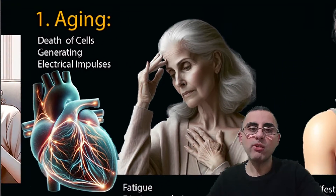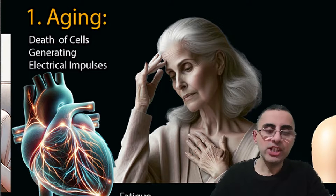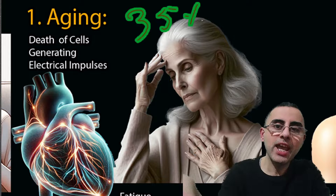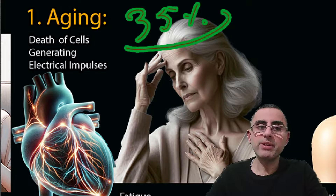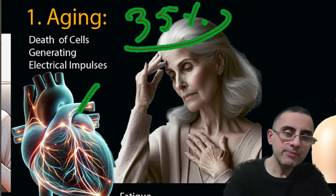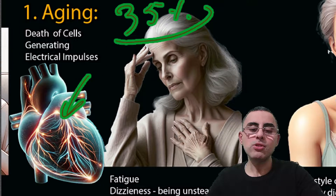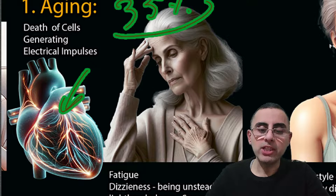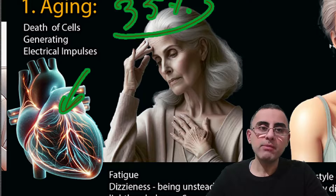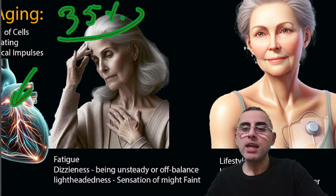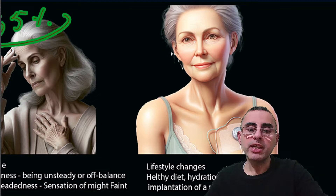The first and most common cause of bradycardia is aging, which accounts for around 35 percent of cases. During aging, all cells gradually die, including the electrical impulse-generating cells in the heart, which causes slow heart rate. The top symptoms of bradycardia during aging are dizziness, when people feel unsteady or off balance, lightheadedness with a sensation of faintness, and chronic fatigue.